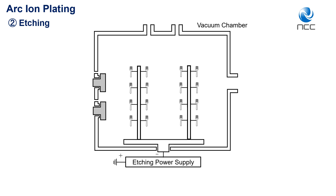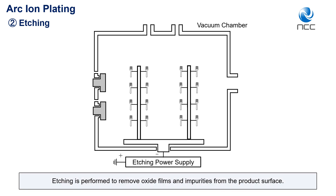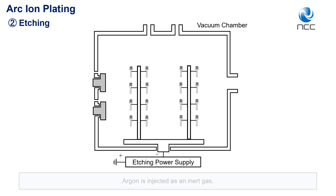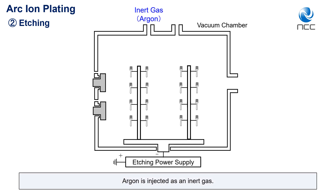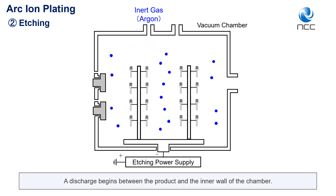Etching. Etching is performed to remove oxide films and impurities from the product's surface. Argon is injected as an inert gas. A discharge begins between the product and the inner wall of the chamber.